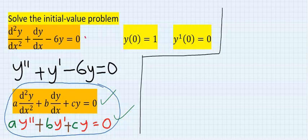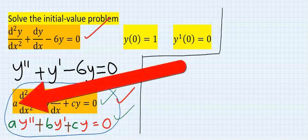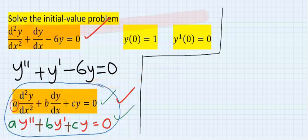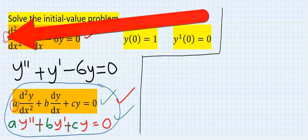Step number two: Compare the given problem to the standard form. From the standard form, a is here. And from the given question, a is one.